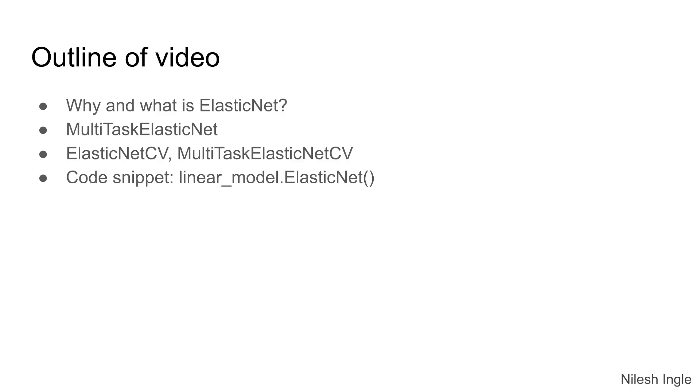So in this video we'll look at the intuition behind ElasticNet, and then I'll mention MultiTask ElasticNet and cross-validation forms of those. And finally I will go through a code snippet where we can implement ElasticNet. Now in the next video we'll do the actual implementation and coding in Python.